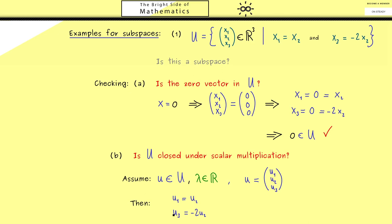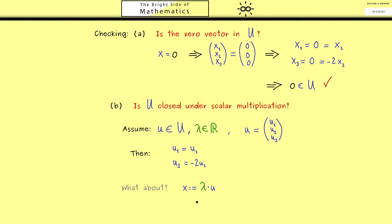This has to be satisfied by the assumption that u is in the set U. Now the question is: what can we say about the scaled vector λ times u? Maybe we simply call this one x. Hence we know for the three components x₁, x₂, x₃, they are equal to λu₁, λu₂, λu₃ respectively.